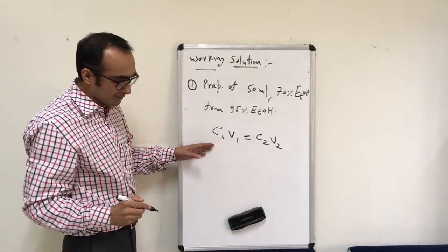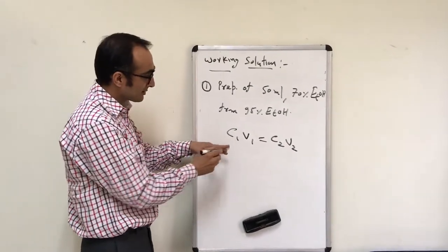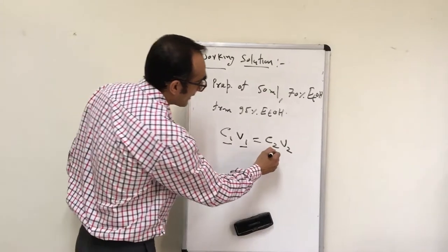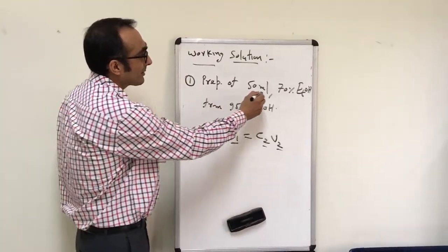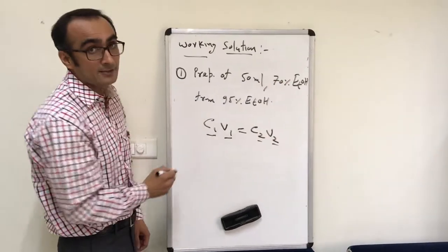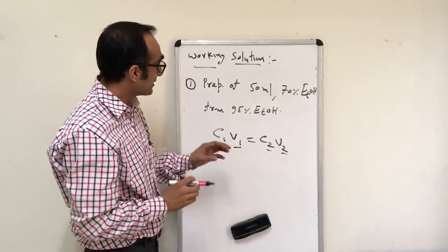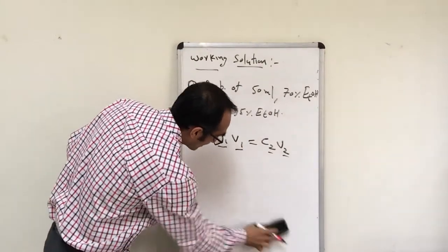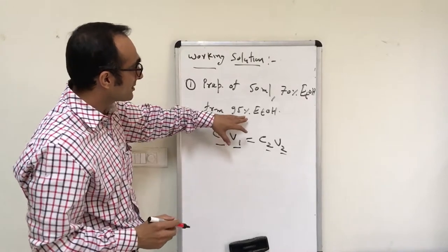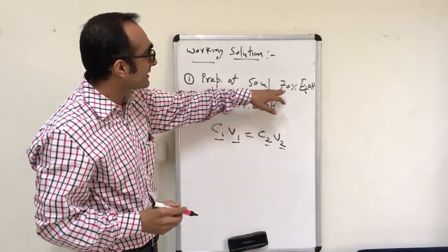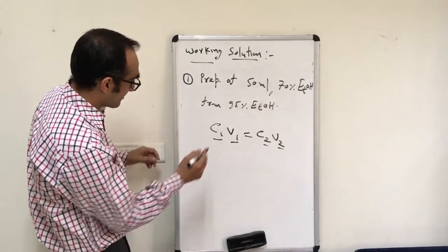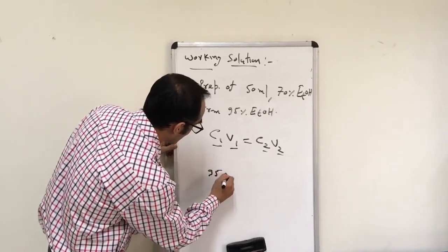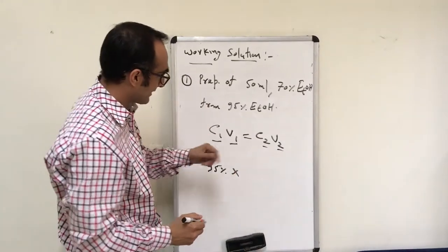In this equation, one side holds the stock solution values. On C1V1, you keep the concentration of the stock solution as C1 and the volume of stock solution as V1, and the working solution is kept on the right-hand side. Let's take this example: preparation of 50 ml of 70% ethanol from 95% ethanol. You have a stock solution of 95% ethanol and need to prepare 50 ml of 70% ethanol. So C1 is 95% and V1 is what we need to calculate.